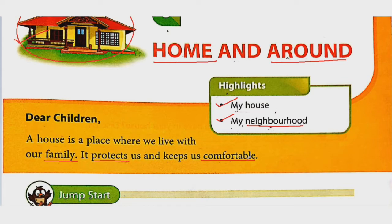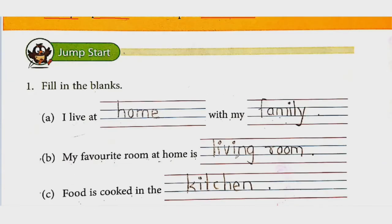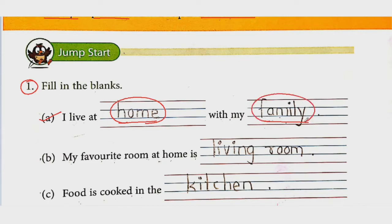Let's solve one jump start exercise. See question number one — fill in the blanks. First one: 'I live at blank with my blank.' Hum log kahaan pe rehte hain? Ghar pe, right? So I live at home. Aur kiske saath rehte hain? Family ke saath — with my family.